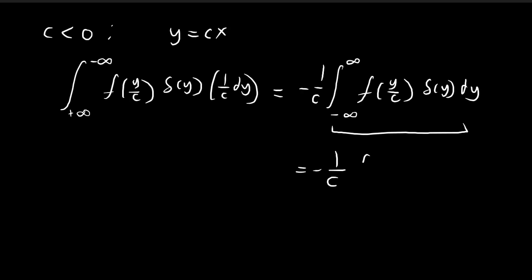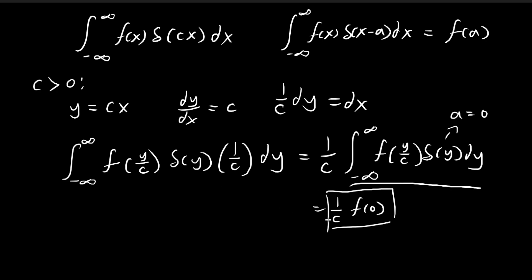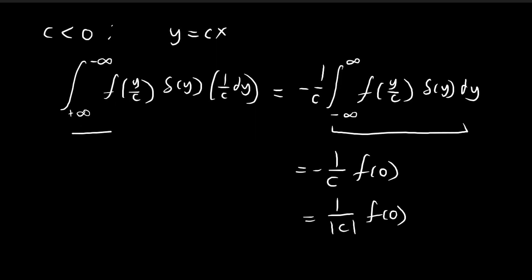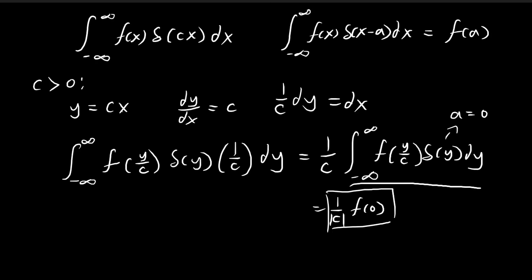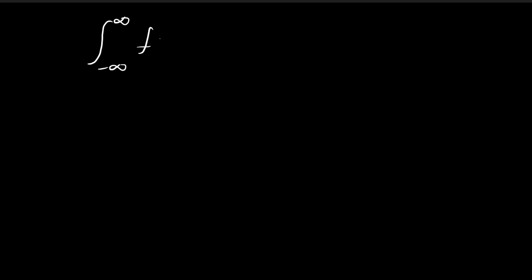Pulling out 1/c as well, on the inside we have the same exact expression as before. So this integral equals f of 0, giving us negative 1/c times f of 0. Since c is a negative number, negative 1/c becomes positive, which is effectively 1 over the absolute value of c. For consistency, we add the absolute value sign in both cases. So no matter whether c is positive or negative, the result is 1 over the absolute value of c times f of 0. To summarize: the integral of f of x delta(cx) dx equals 1 over |c| times f of 0.